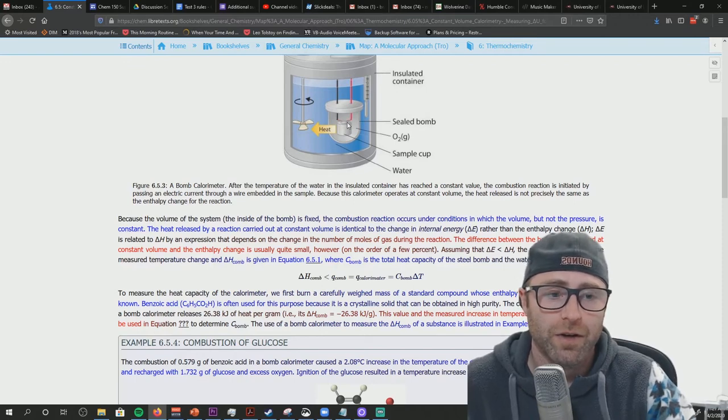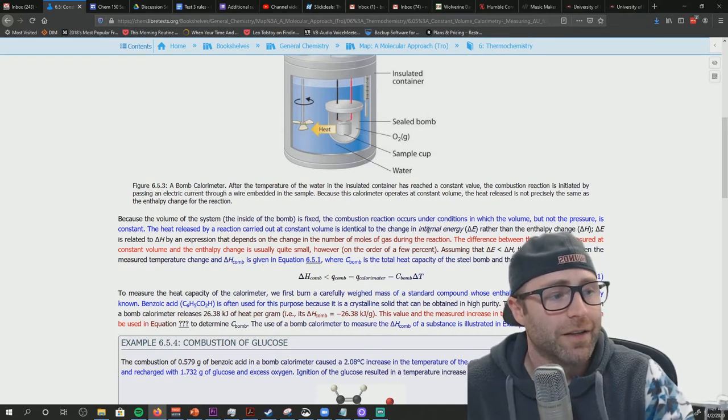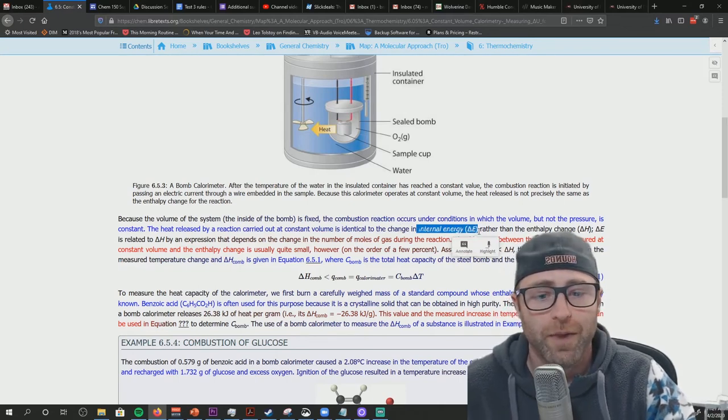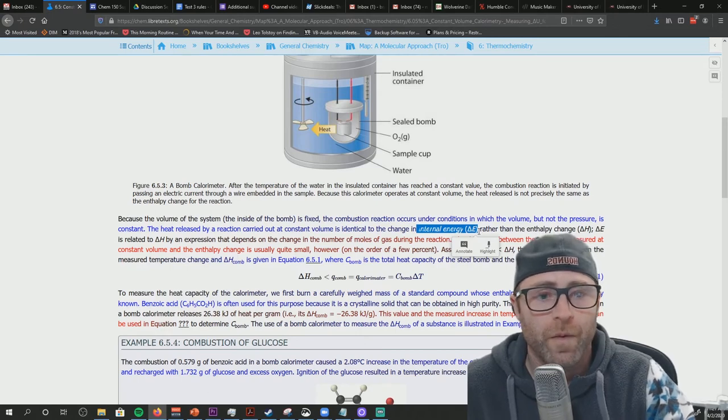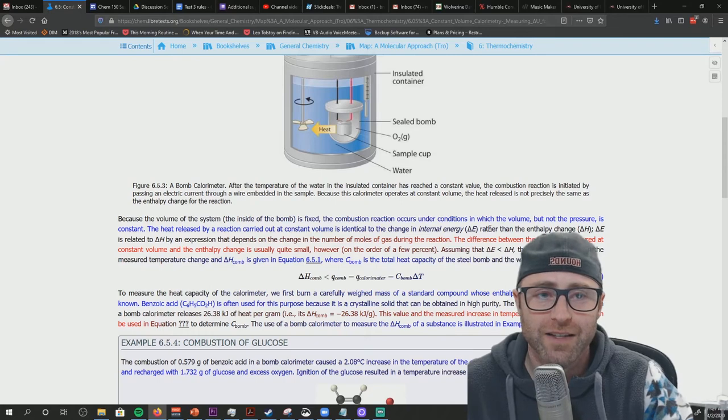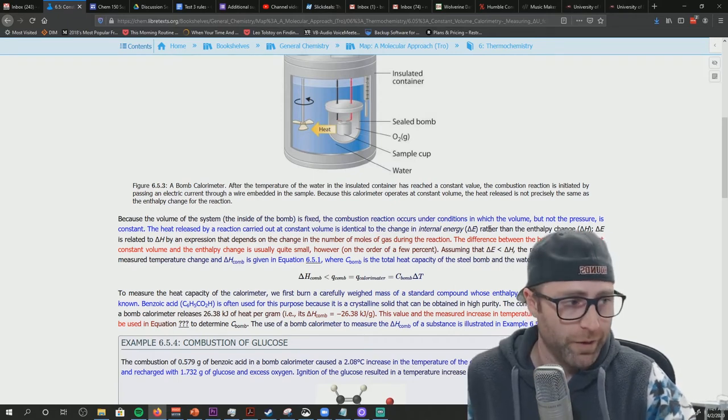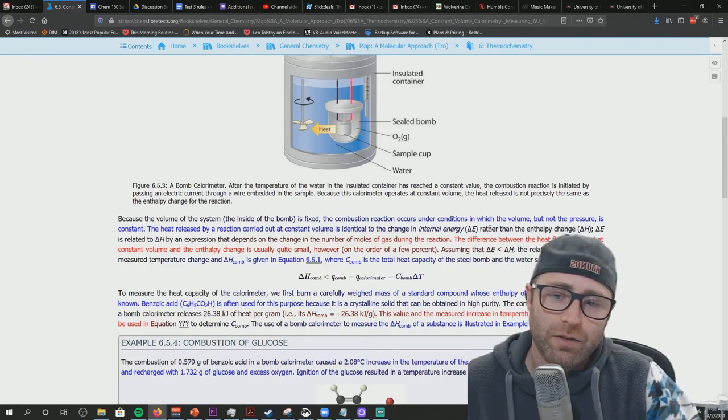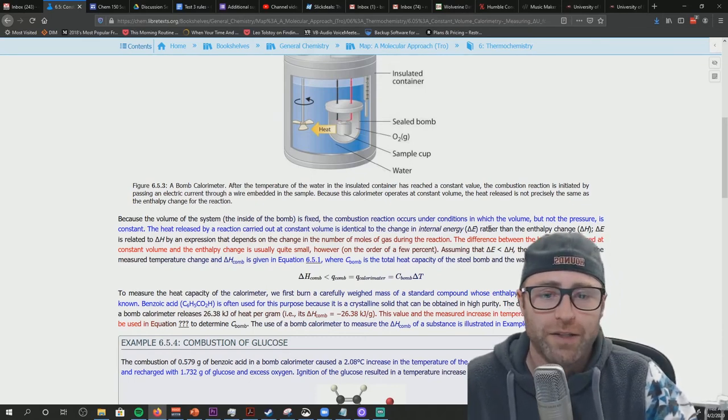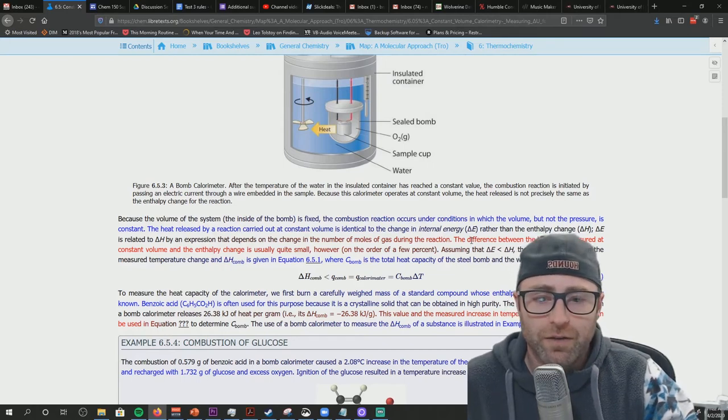Now our heat of reaction, that Q reaction, is not going to equal the change in enthalpy. It's going to equal the change in internal energy. So the amount of energy, the amount of heat Q is going to equal delta E or delta U. And we didn't really go through why that is the case, but mathematically that's how it works. You could derive the equation for yourself, like we did the derivation for constant pressure calorimetry. But what you'll find in the end is the heat of reaction Q reaction at constant volume will equal our change in internal energy, delta E. So that's a big difference between constant volume and constant pressure calorimetry.